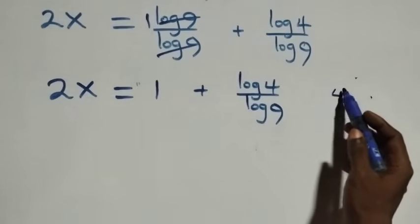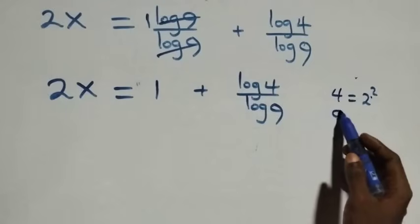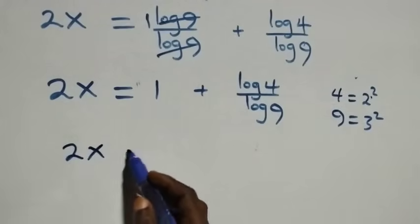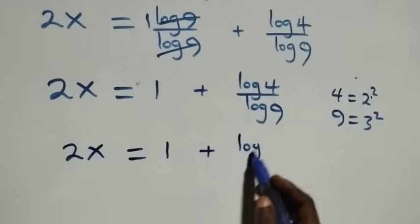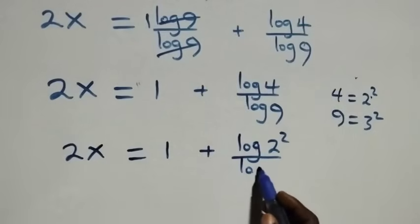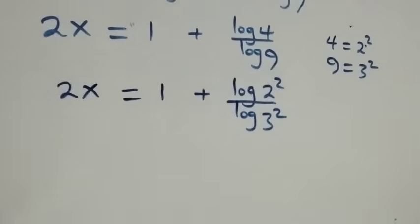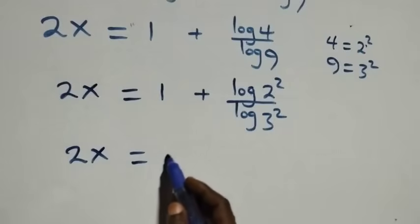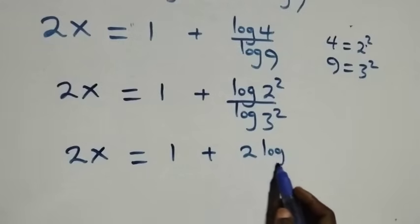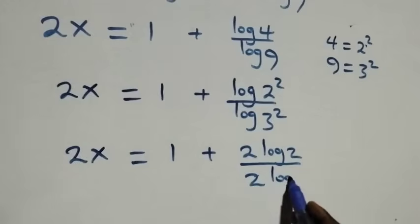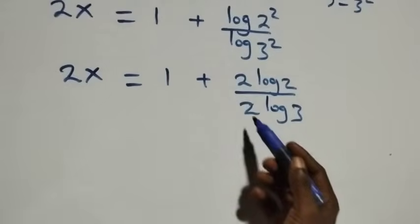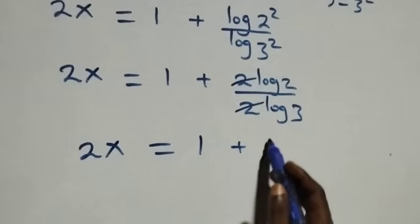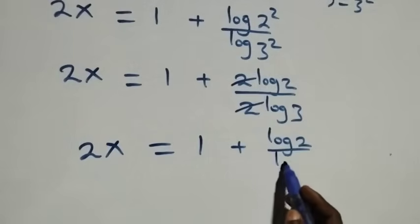In the next step, 4 can be expressed as 2 times 2, which is 2 squared, and 9 can be expressed as 3 times 3, which is 3 squared. So what we have becomes 2x equals 1 plus log 2 squared over log 3 squared. Applying the power rule of logarithms, this becomes 2x equals 1 plus 2 log 2 over 2 log 3. The 2s cancel each other, giving 2x equals 1 plus log 2 over log 3.